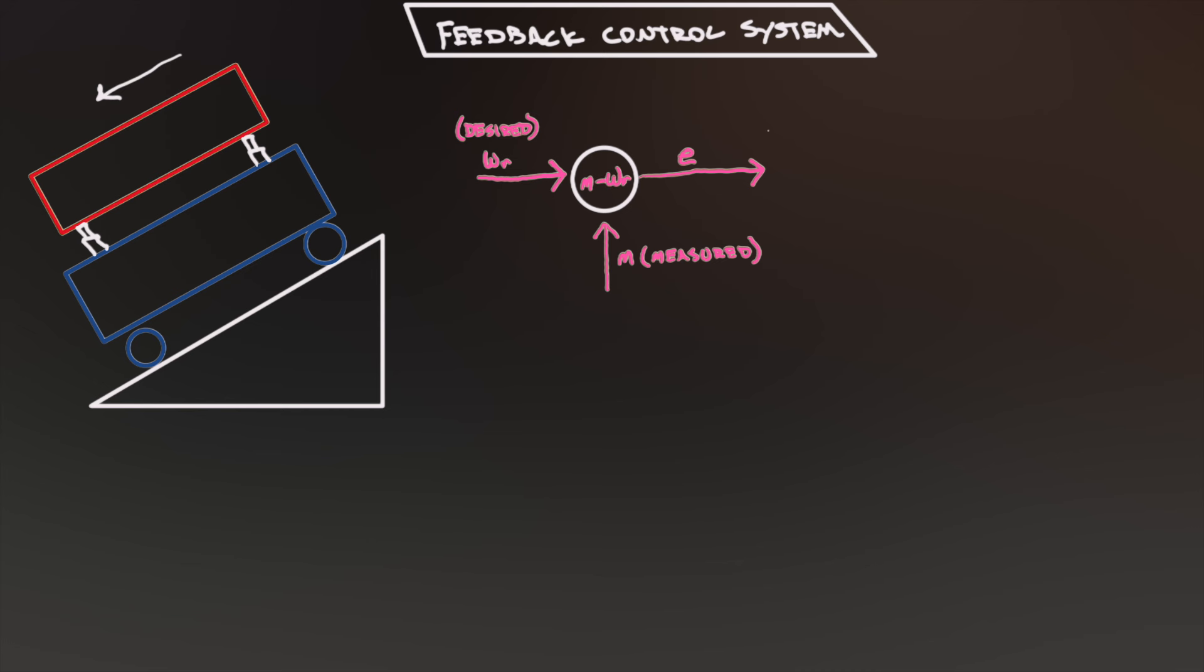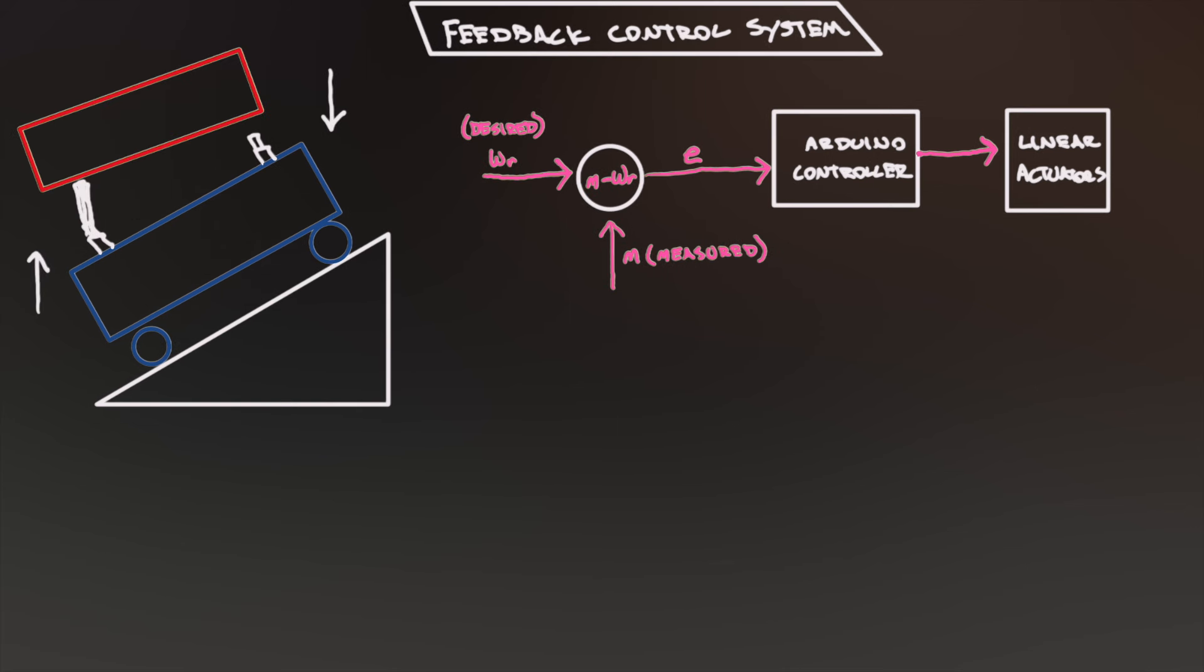The error is the difference between these two values. Or put another way, how different is our current state than our desired state? That error value gets sent over to our Arduino, and based on whether that error is positive, negative, and its magnitude, which is how big it is, it tells which linear actuators to extend, retract, or stop.